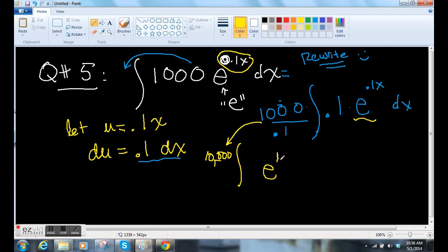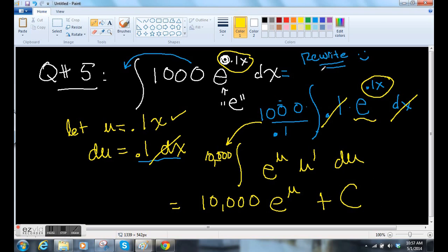OK. And this thing is perfect now. This looks like e to the u because our u is right here. And this 0.1dx, that's the derivative of u. So this is the form we want. We want e to the u and then everything else is the derivative. So our answer is 10,000 times e to the u plus a constant. And we're done.